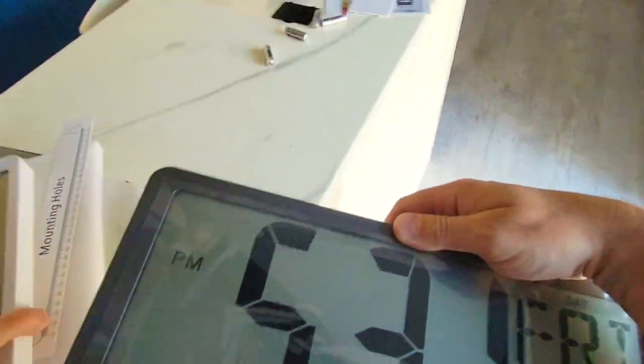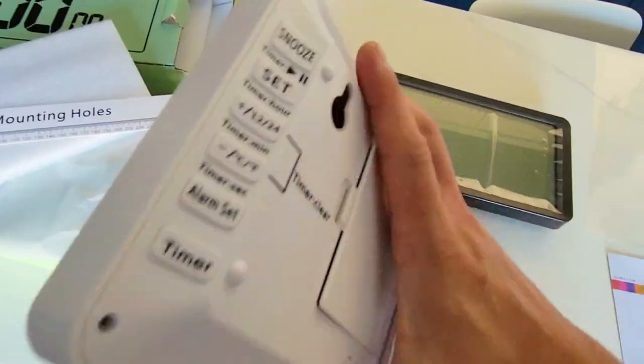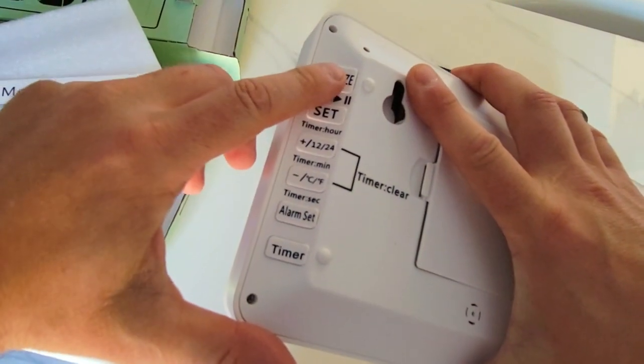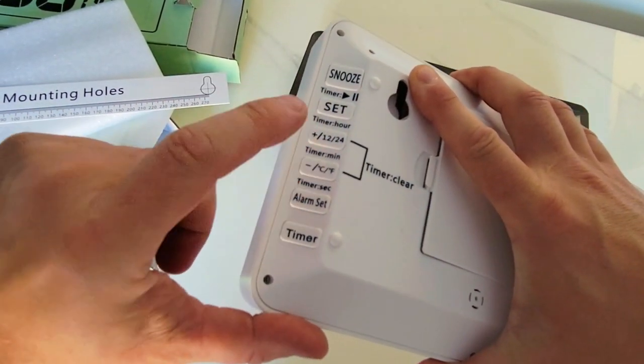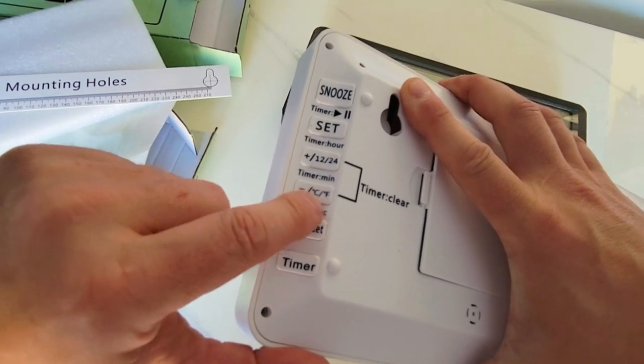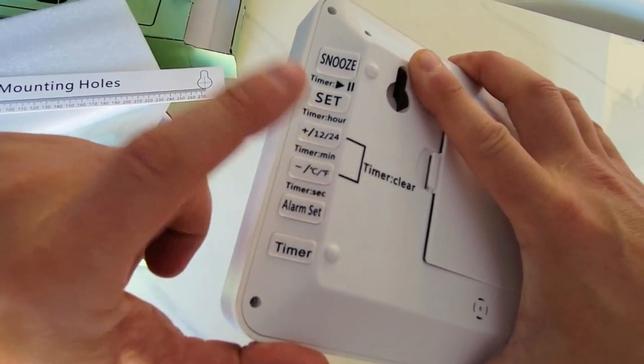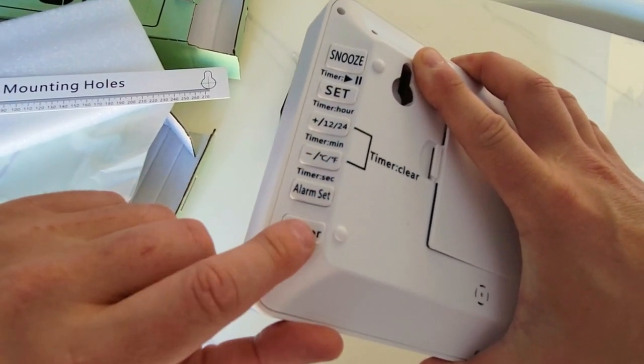All right, so really, you have to decide which one you're keen on using. Let's take a look at the buttons here. You've got your snooze, your set, your timer. This is also for your Celsius or Fahrenheit. You've got your alarm, and then you've got another timer.